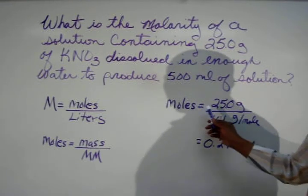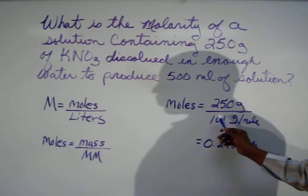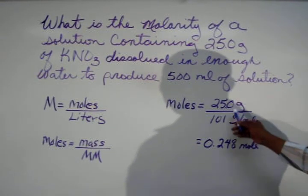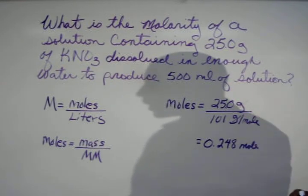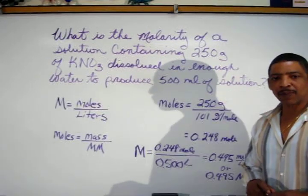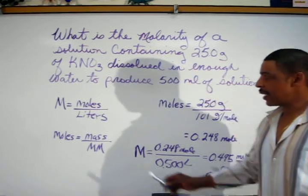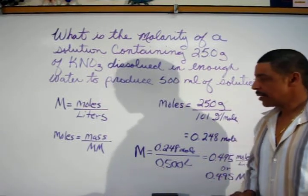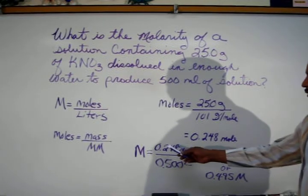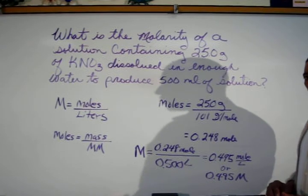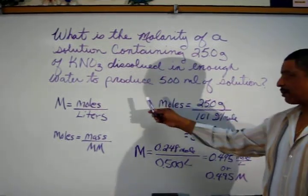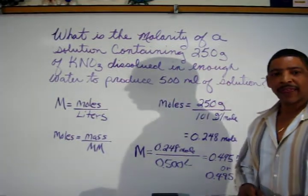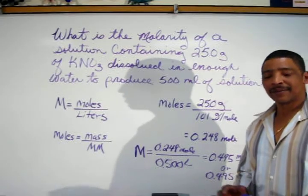Now, solving for moles, 25 divided by 101 equals 0.248 mole, where during the calculation, grams cancel out. At this point, it is possible to calculate the molarity, where molarity is equal to moles of solute divided by liters of solution. The moles of solute was calculated to be 0.248 mole. The total volume of the solution from the practice problem is 500 milliliters. However, the molarity formula does not accommodate milliliters. Therefore, milliliters must be converted to liters by dividing by 1,000.